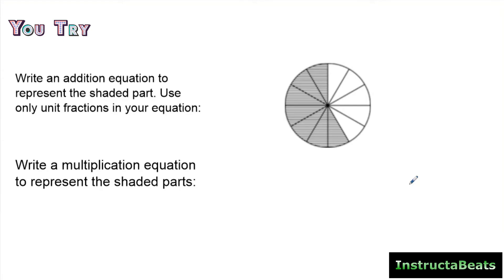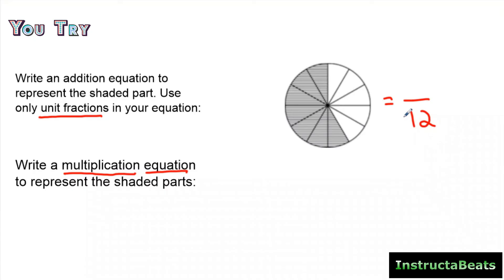Here we have an area model. Step one: write an addition equation using only unit fractions to represent the shaded part. Step two: write the multiplication equation that also represents the shaded parts. I have twelve equal parts making up the whole — think of it like a pizza — and it looks like seven pieces are shaded, giving us seven-twelfths. Go ahead and pause the video, try this one out, and then push play to check your understanding.